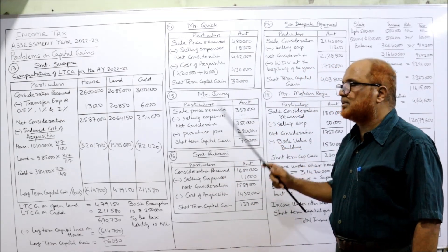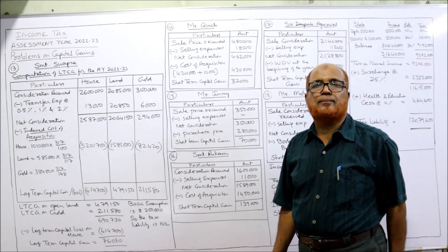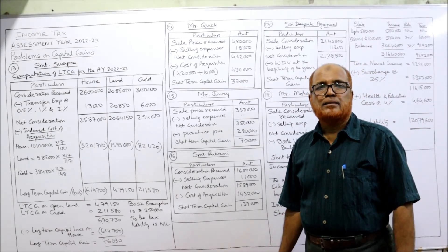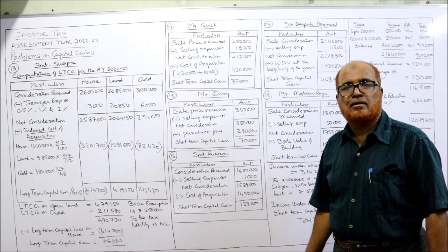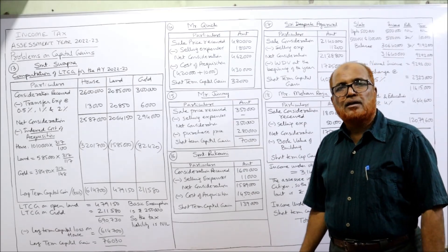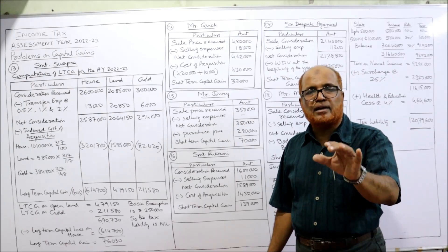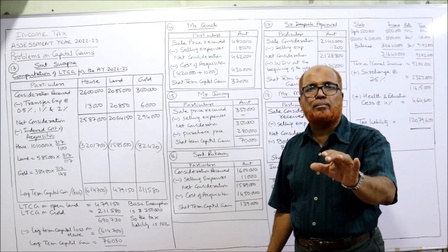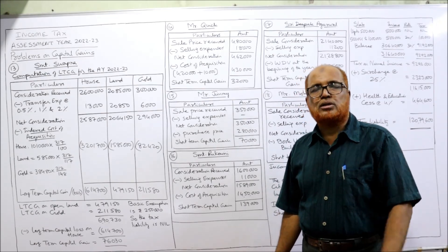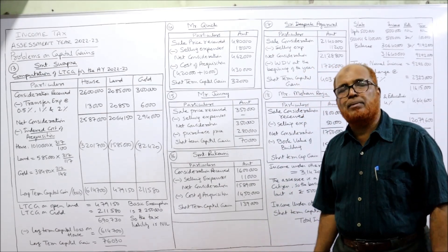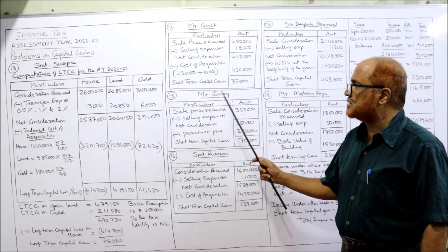So ₹4,62,000 minus ₹4,30,000 gives the short-term capital gain. This is the first time we are discussing short-term capital gain. In the working note you should write: the building was sold immediately after 12 months, so it is a short-term capital gain. The tax on short-term capital gain will be applied at slab basis along with other incomes. That's it.